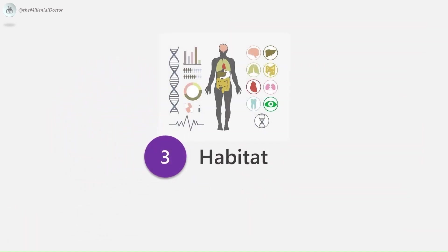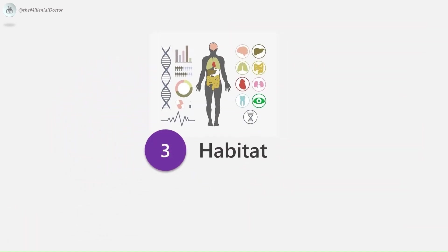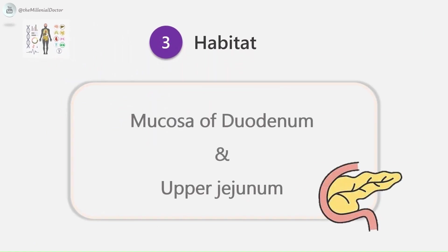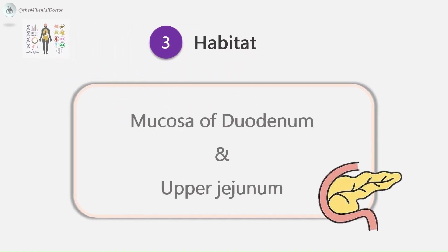The habitat: Giardia lamblia lives attached to the mucosa of the duodenum and upper jejunum, and is the only protozoan parasite found in the lumen of the human small intestine. Sometimes it can be seen in the gallbladder and in the biliary drainage.